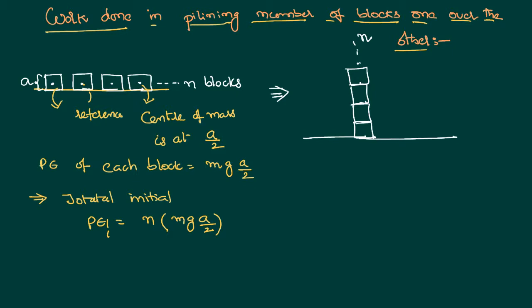Now all these blocks, each one having a side A, n blocks are arranged one over the other. Therefore the total height of the system will be N into A. So where is the center of mass of the system? At the middle of this point.